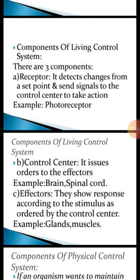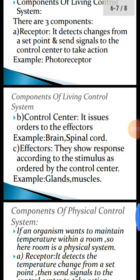The third component is the effector. Their function is to show response according to the stimulus or change as ordered by the control center. Its examples are muscles and glands, which produce different kinds of secretions.